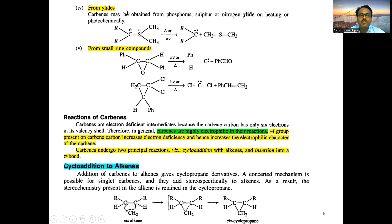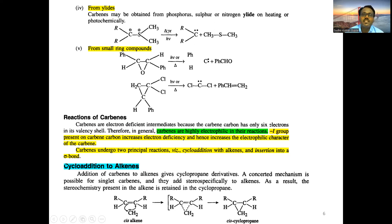Carbenes can also be obtained from small ring compounds, which easily undergo decomposition due to high ring strain. They yield the carbene and a neutral compound; if the atom in the three-membered ring is a carbon atom (not a heteroatom), we can get a free radical and an alkene. Since alkenes can be formed during carbene generation, alkenes can also react with carbenes to give small ring compounds.